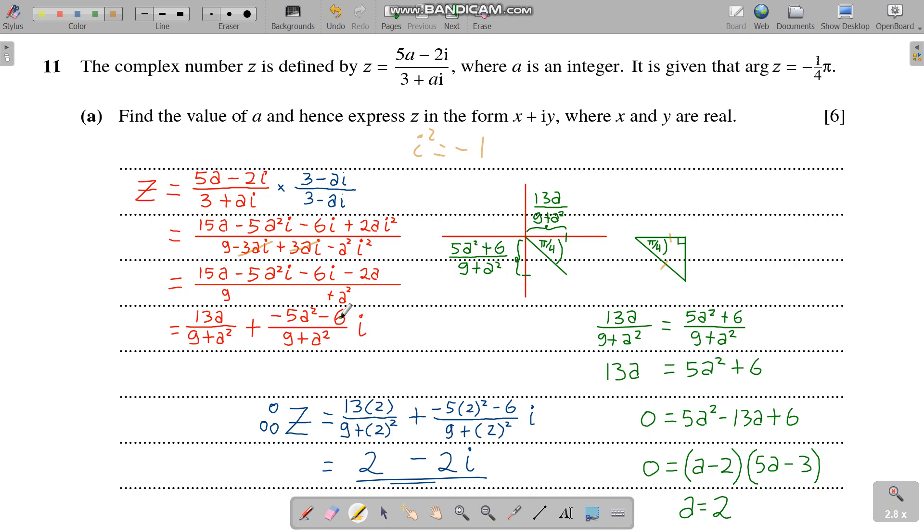Now we can simplify: 15a minus 2a is 13a. So we can split the one without i, the real part, and here we have the ones with i. Minus 5a squared, so the i here is like factored out, so we have minus 5a squared minus 6, still divided by 9 plus a squared, and multiplied by i. So this is the real part, this is the imaginary part.